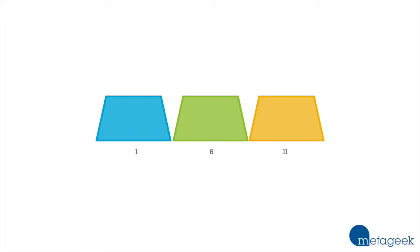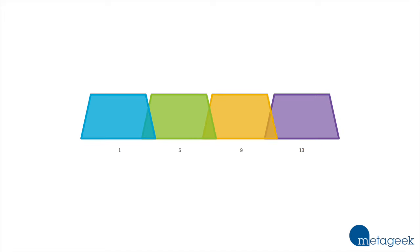And this isn't true for every part of the world. In some places, like Europe, you can use channels 1, 5, 9, and 13 as a non-overlapping channel scheme, but it isn't used very often.